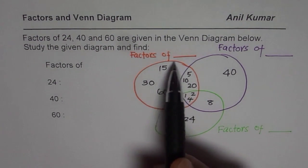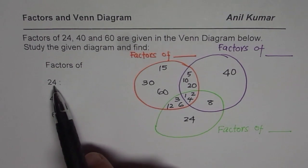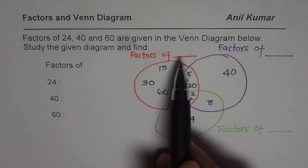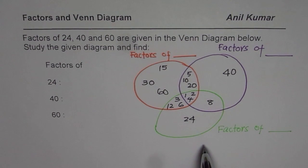Orange circle has factors of 24, 40 or 60, whichever, write it down. That is your first question.